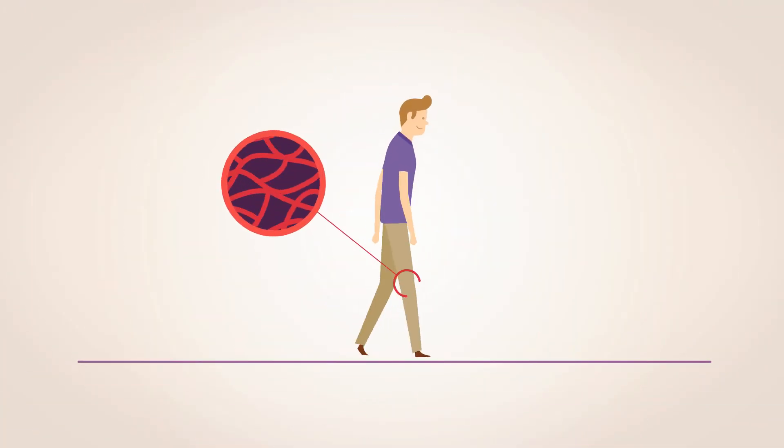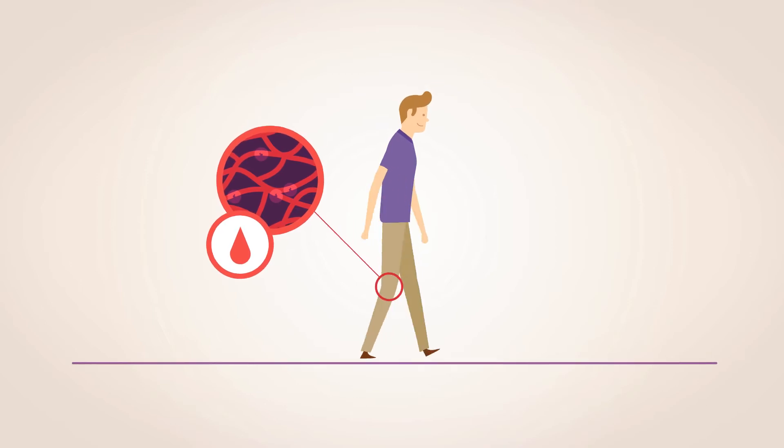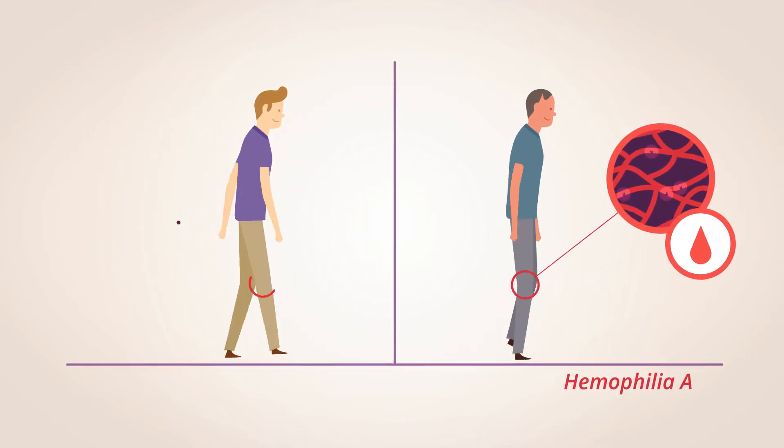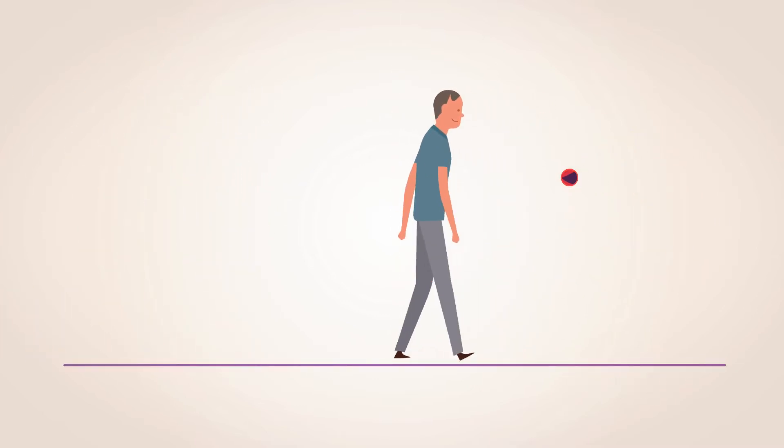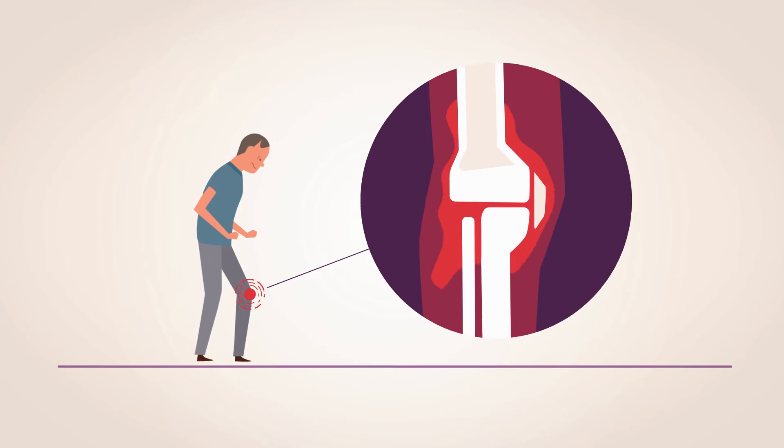Microbleeds happen in all of us, as even regular body movements like walking or standing up can cause them. For people with hemophilia A, when a bleed occurs, the bleeding doesn't stop as easily. So any bleeds, even if they are invisible, can lead to long-term problems over time, like irreversible joint damage.